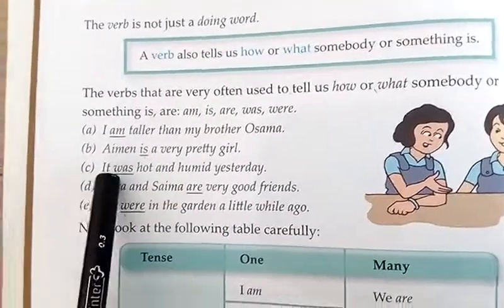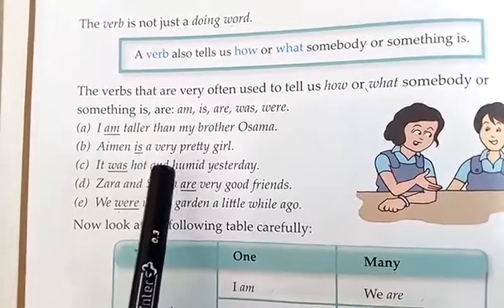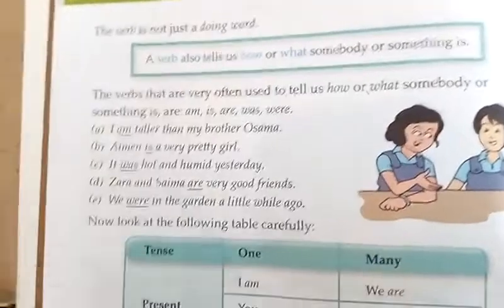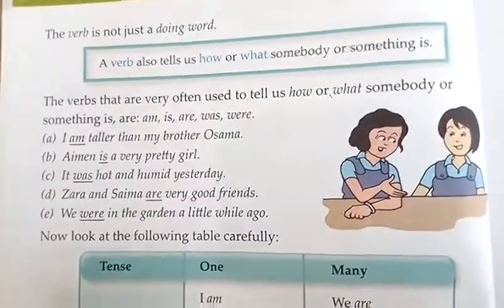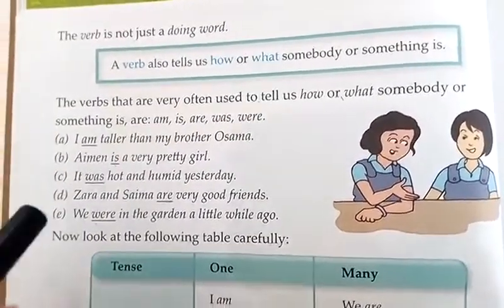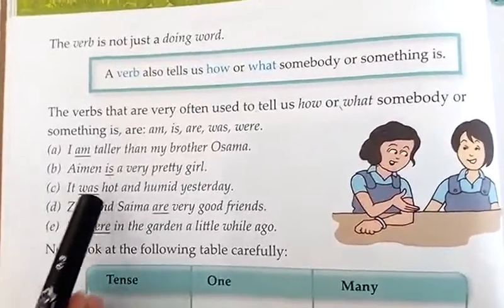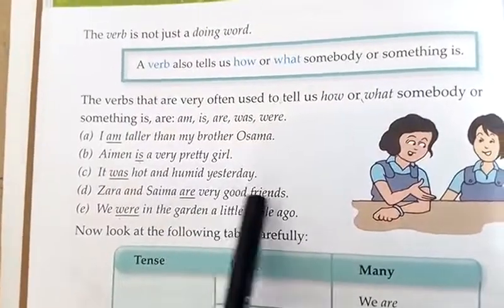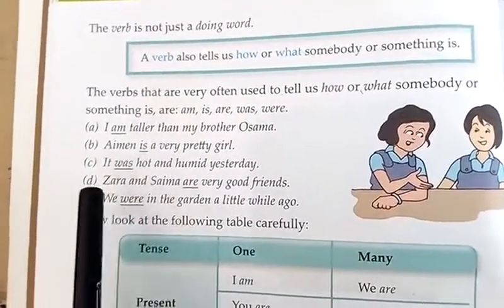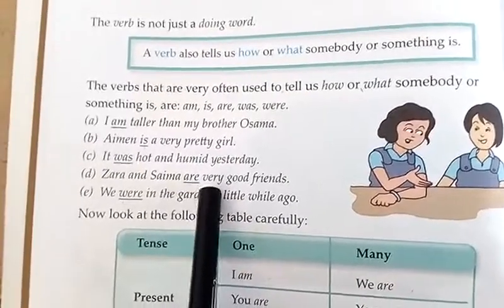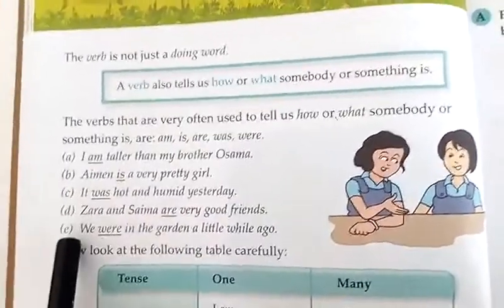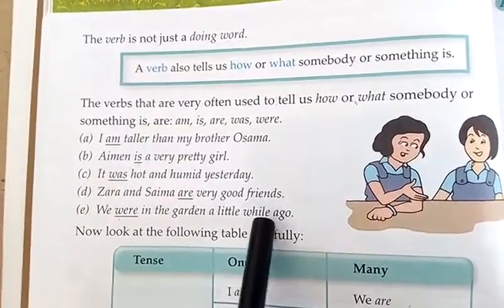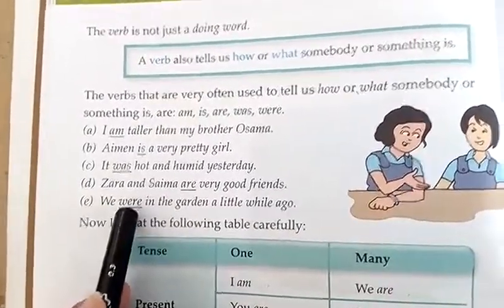'It was hot and warm yesterday.' Yesterday گزر گیا، وہ بہت گرم دن تھا — تو past کی بات ہو تو it کے ساتھ was لگائیں گے۔ 'Zara and Saima are very good friends.' دو لوگوں کی بات ہوئی ہے، تو are لگایا۔ 'We were in the garden a little while ago.' We کے ساتھ were لگاتے ہیں۔